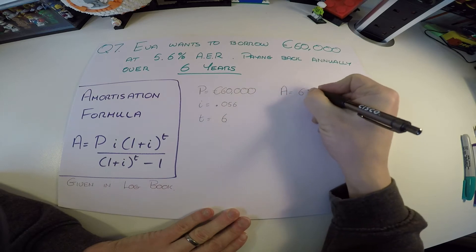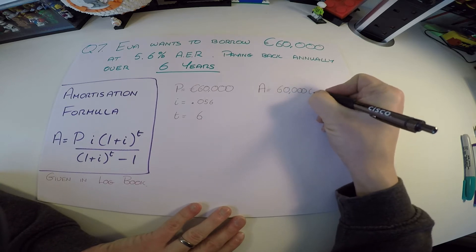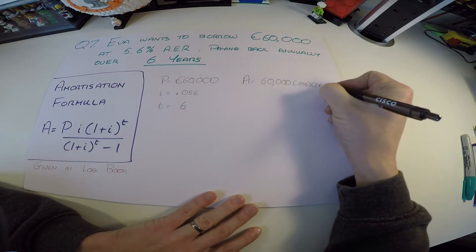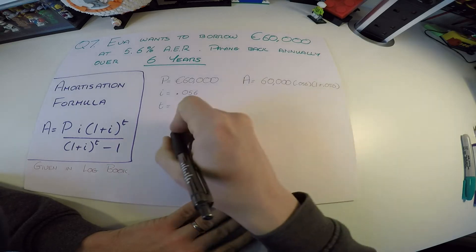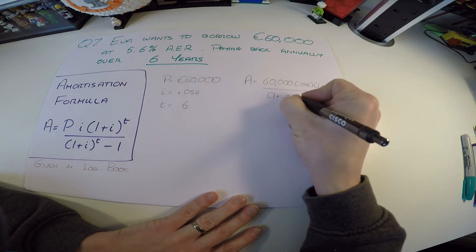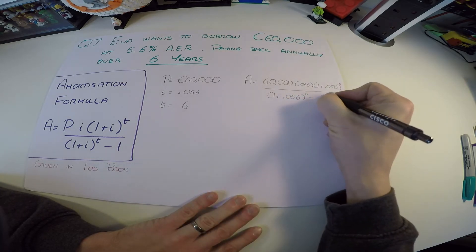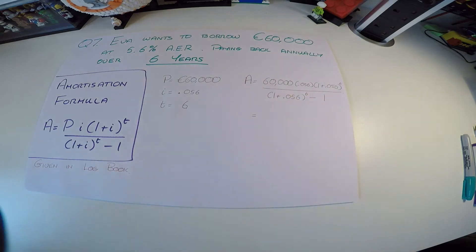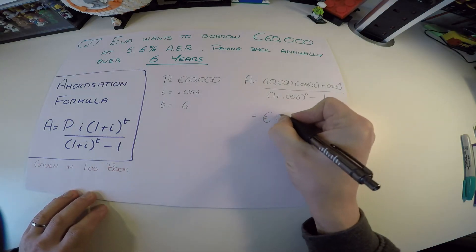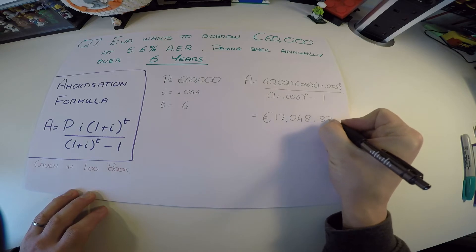A equals 60,000 multiplied by i which is 0.056, times (1 + 0.056) to the power of 6, all over (1 + 0.056) to the 6 minus 1. When we put all that into the calculator, we get 12,048 euros and 83 cents. That's part A done.